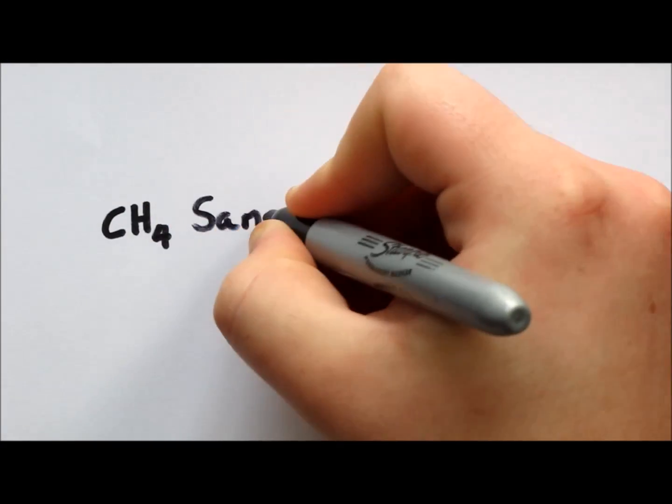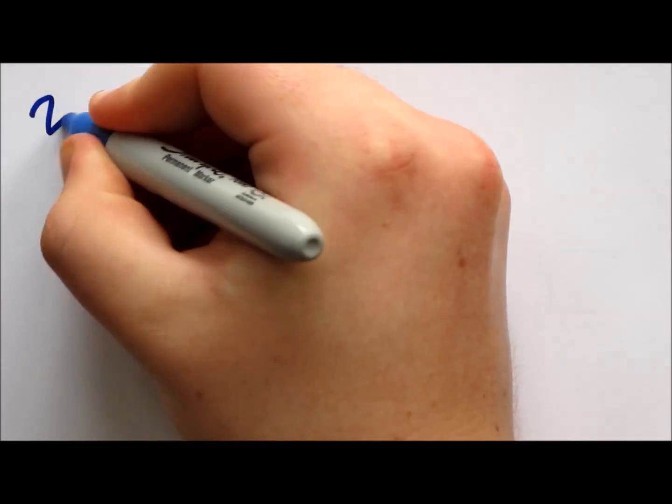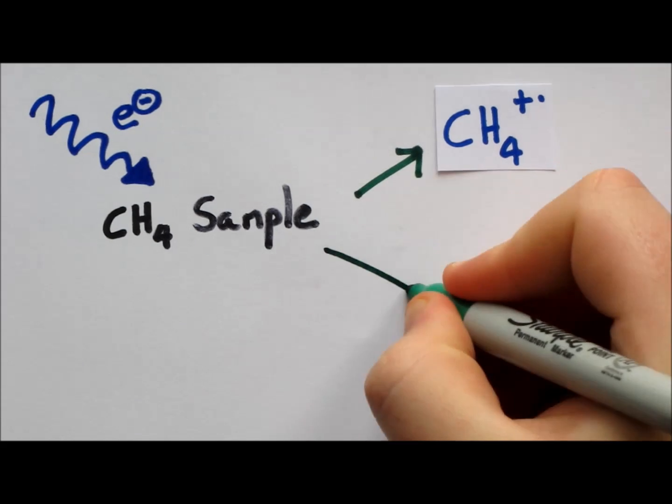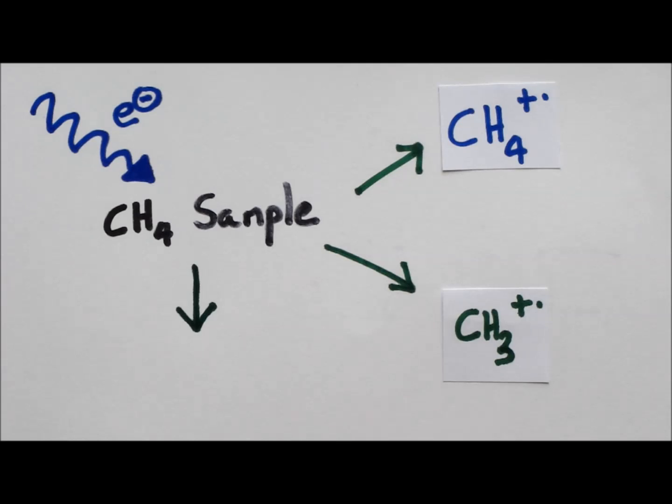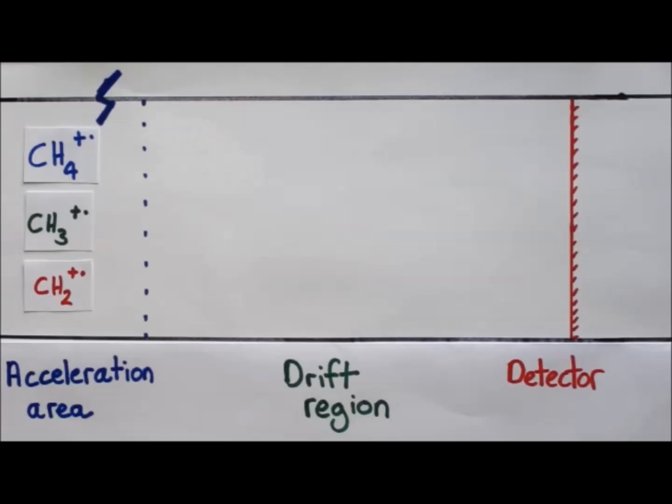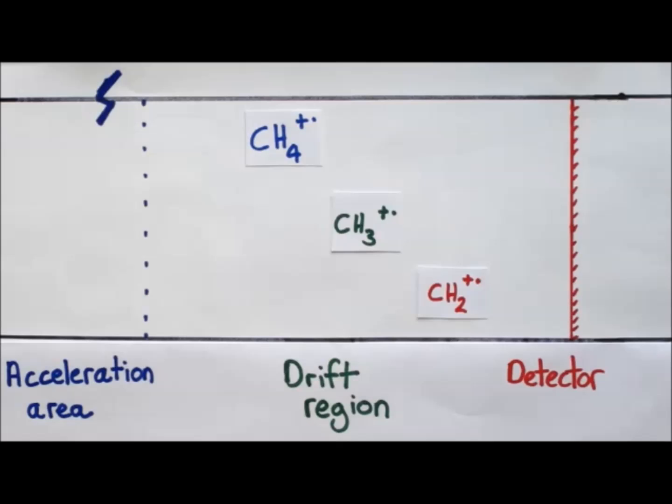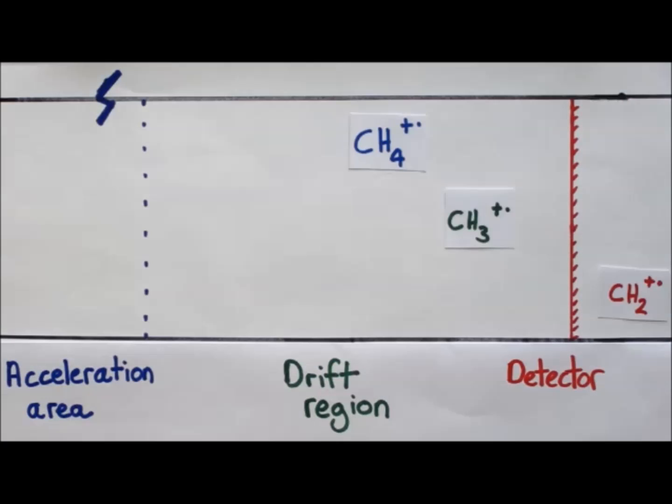To finish, let's recap the whole process. The sample enters the instrument in the gas phase, and is ionized by a stream of high energy electrons. This can result in fragmentation. An electric field accelerates these ions down the drift region, and they separate with the heaviest traveling the slowest, and the lightest traveling the fastest. A detector registers these ions, and sends a signal to a computer.